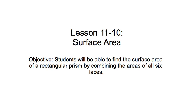This is a lesson on finding surface area. The objective today is for you to be able to find the surface area of a rectangular prism by combining the areas of all six of the faces of the prism. A cube has six faces on it. If we can find the area of each of the faces and then combine them all, we're going to get the total surface area.